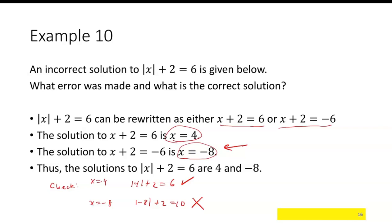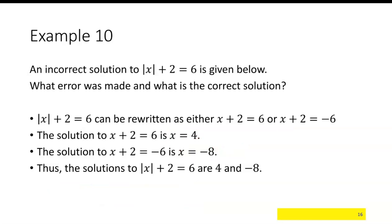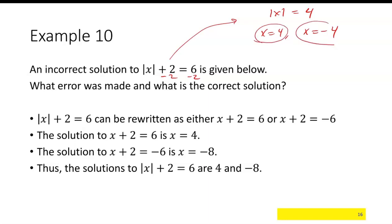What should have been done? Looking at the absolute value of x plus 2 equals 6, we must get the absolute value by itself first. The first step should have been subtracting 2 from both sides, giving the absolute value of x equals 4. From there, x equals 4 or x equals negative 4. Both solutions check. So again: first get the absolute value by itself, then break it into two equations and solve.